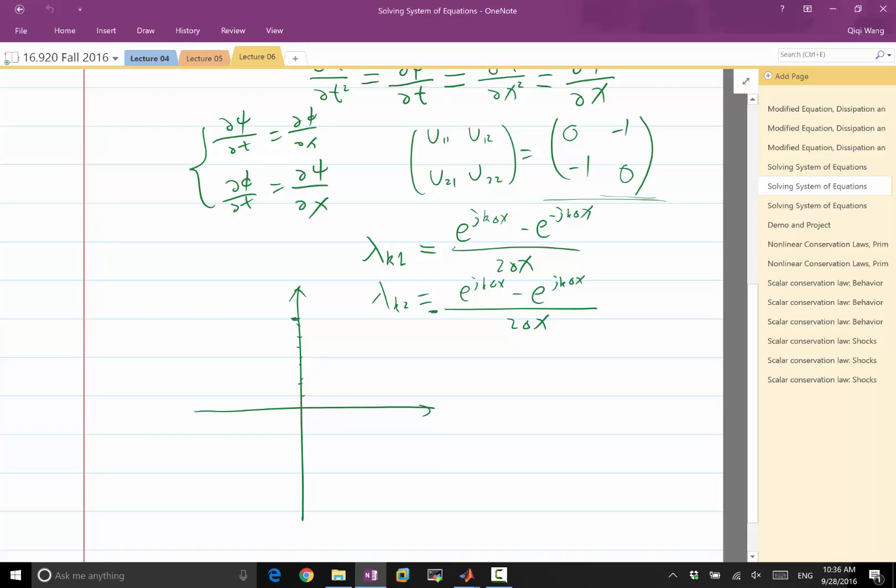They go all the way to 1 over delta x times, this is imaginary axis, this is real axis. And they go also all the way to minus 1 over delta x on the imaginary axis. So, all the eigenvalues of both lambda k1 and lambda k2 lies in that region.